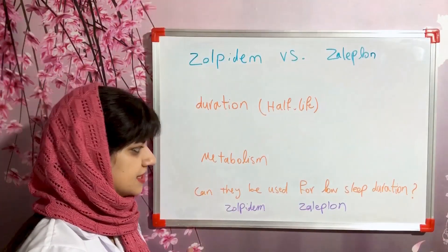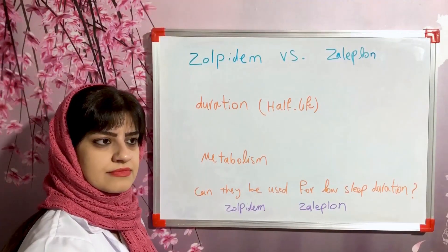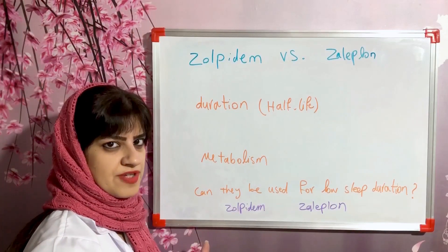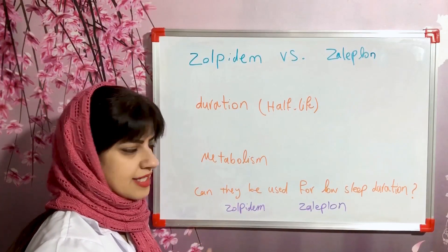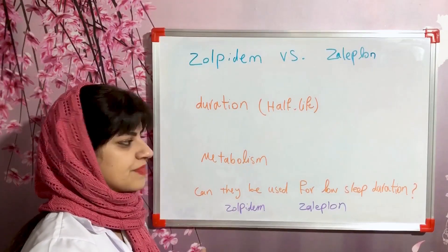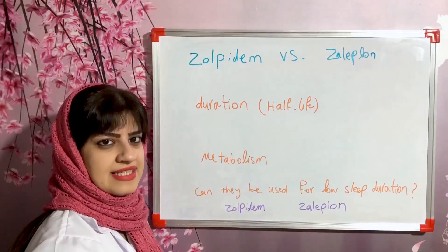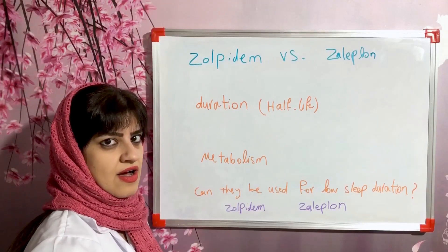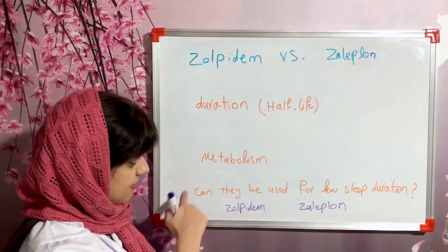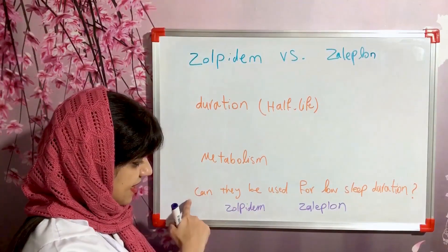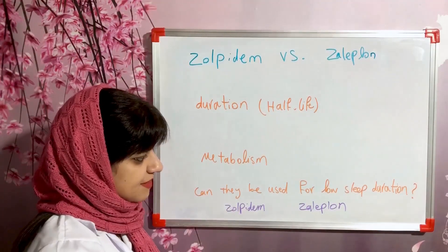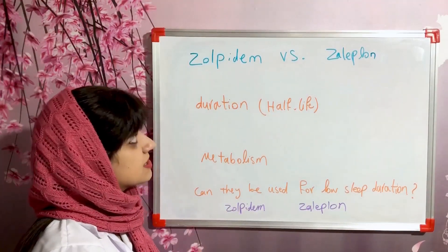Regarding metabolism, zolpidem is removed more slowly from the female body. Based on this fact, females or women may need lower doses of zolpidem.